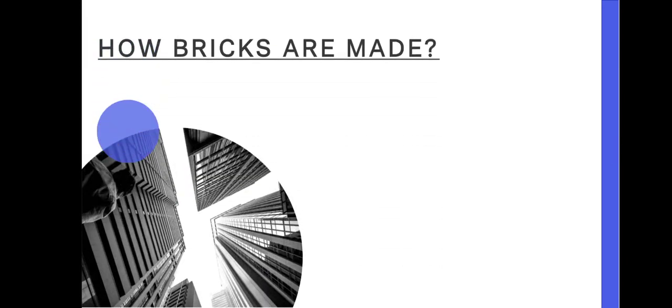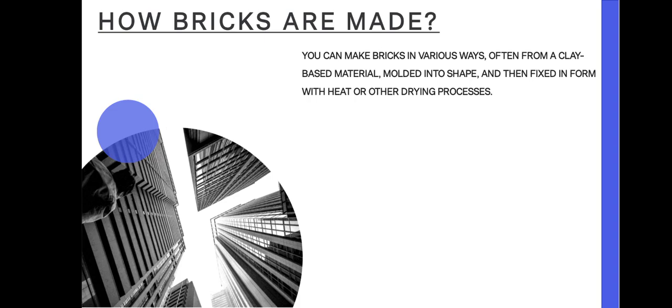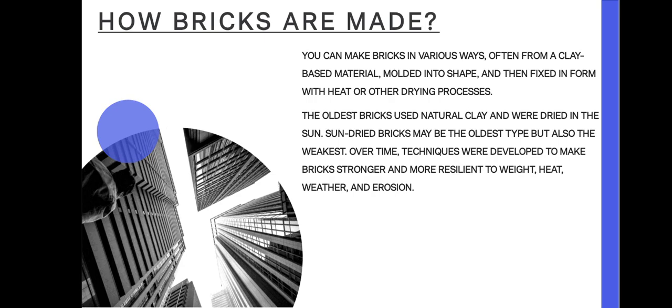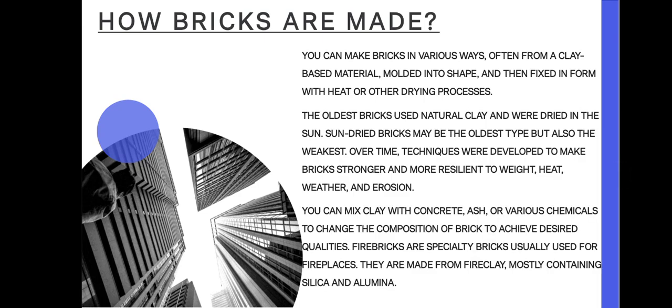You can make bricks in various ways, often from clay basic materials molded into shape and then fixed with heat or other drying processes. The oldest bricks used natural clay and were dried in the sun. Sun-dried bricks may be the oldest type but also the weakest. Over time, techniques were developed to make bricks stronger and more resilient to weight, heat, weather, and erosion. You can mix clay with concrete, ash, or various chemicals to change the composition of the bricks to achieve desired qualities. Fire bricks are specially made bricks used for fireplaces; they are made of fire clay, mostly containing silica and aluminium.